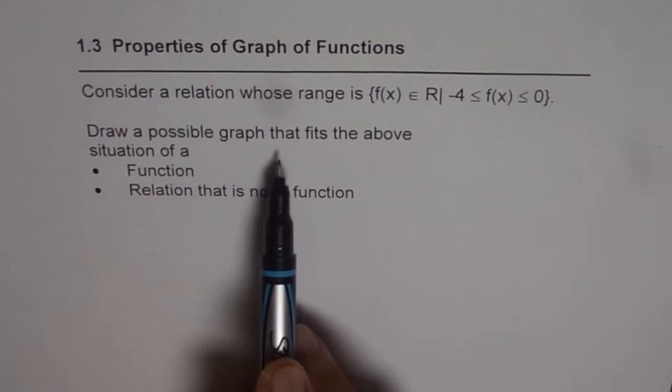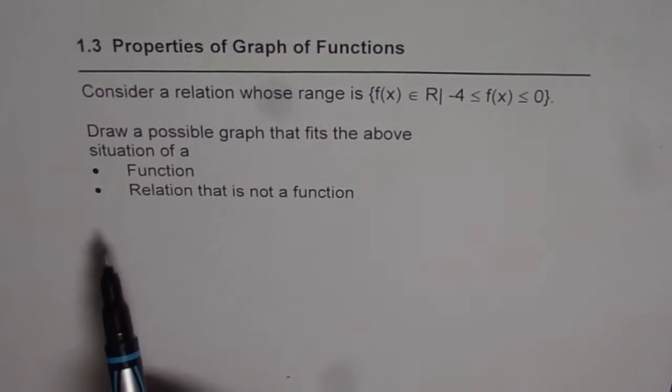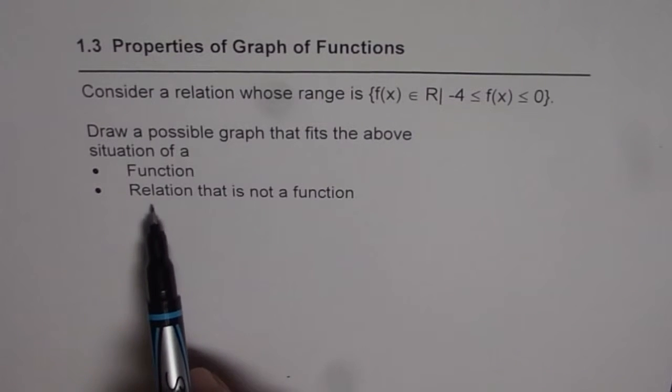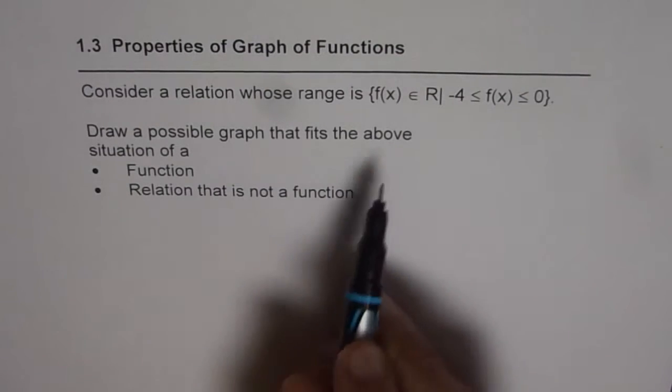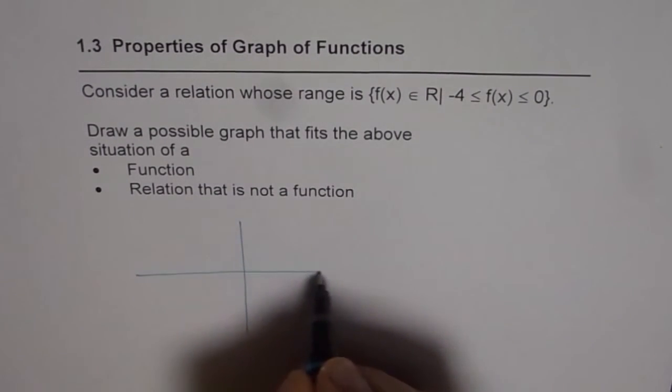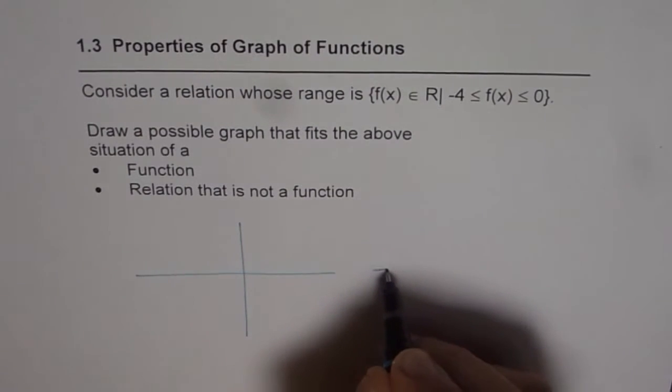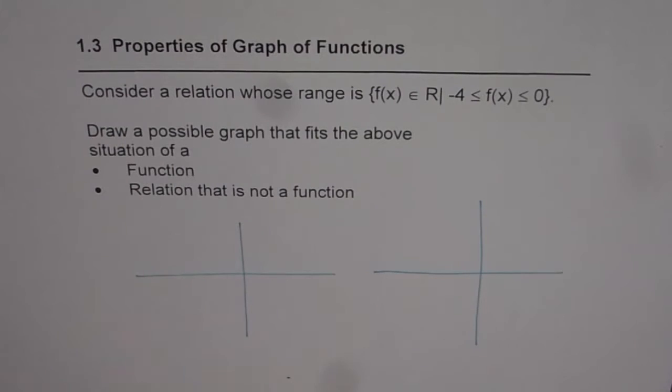Draw a possible graph that fits the above situation of a function and then of a relation that is not a function. That means we need to draw two graphs. One for a function which fits into this description. The other one is for a relation which is not a function.